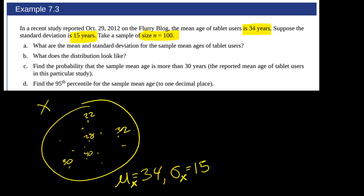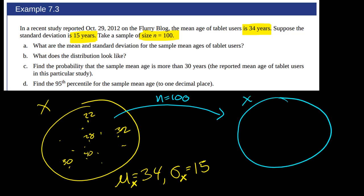We're going to take a random sample of 100 (n = 100) people. We'll get different possible sample means — you could get 31 as the sample mean, 32, 33, etc. So the first question is: what is the mean and the standard deviation for those sample means? What is μ X̄ and σ X̄?